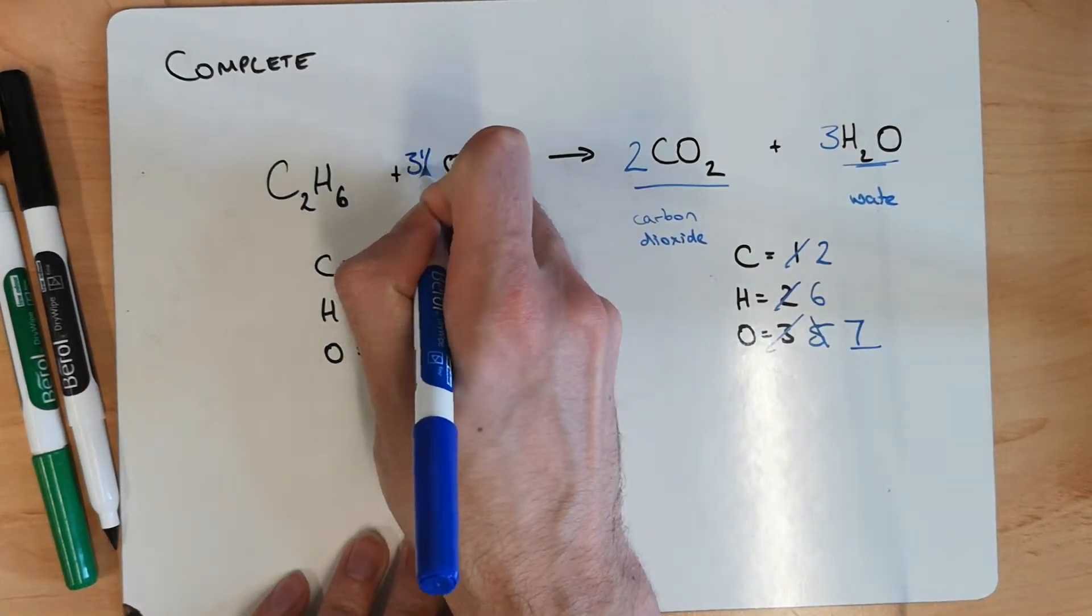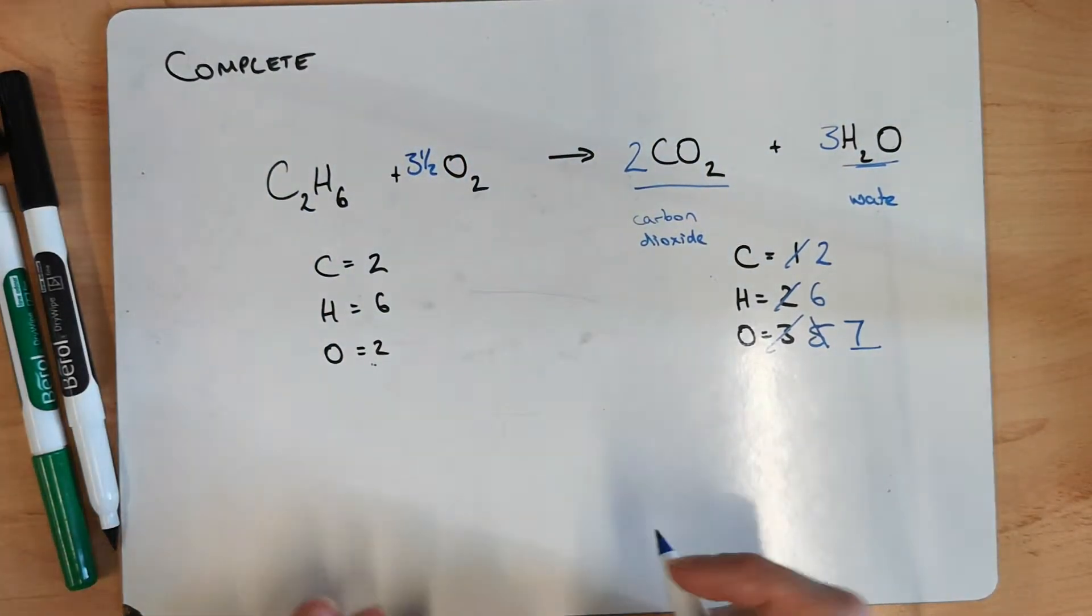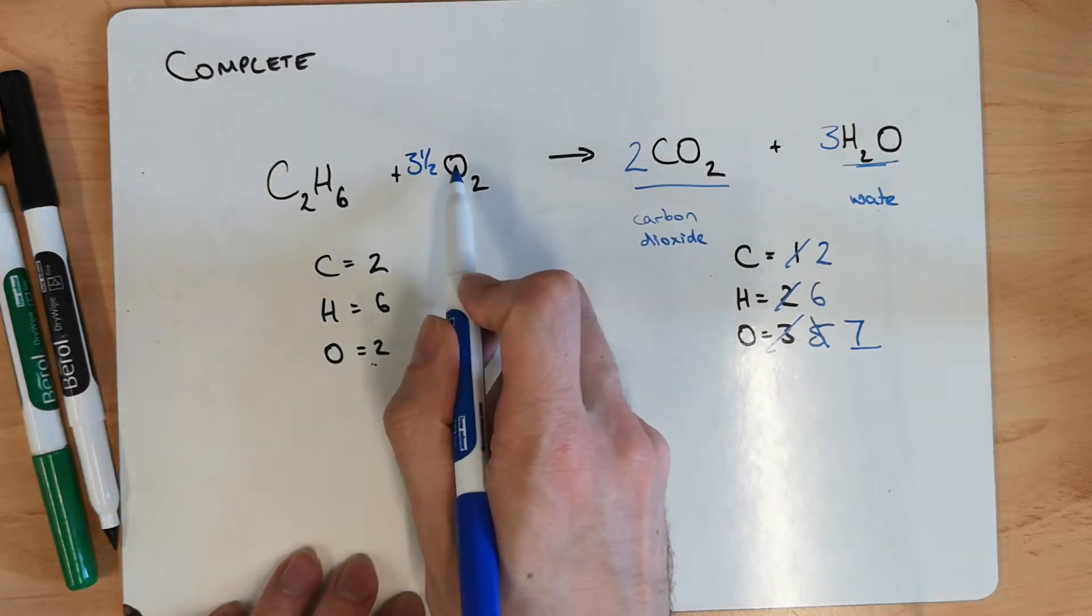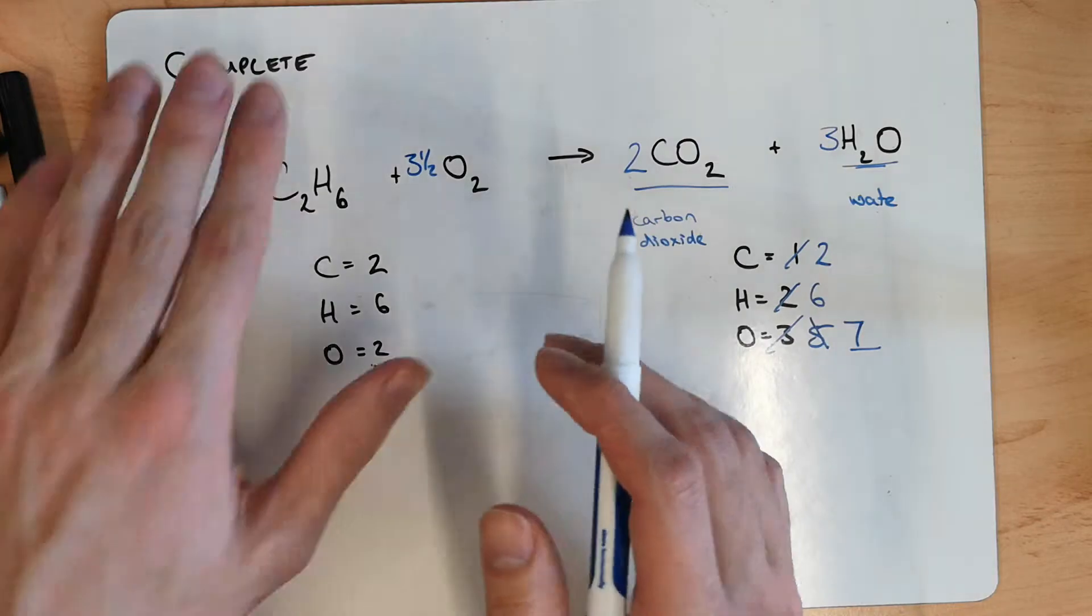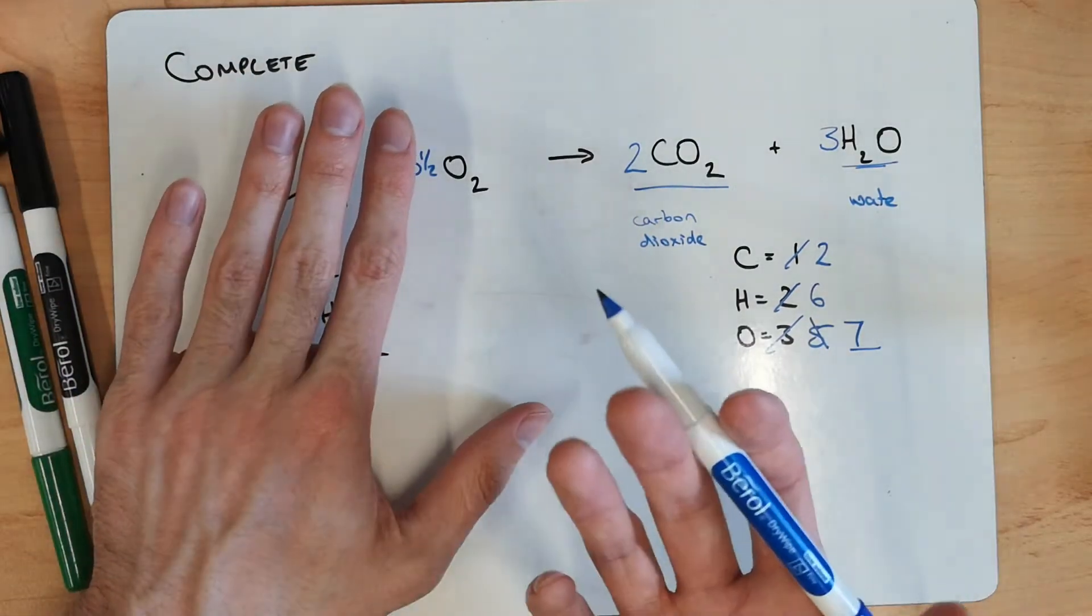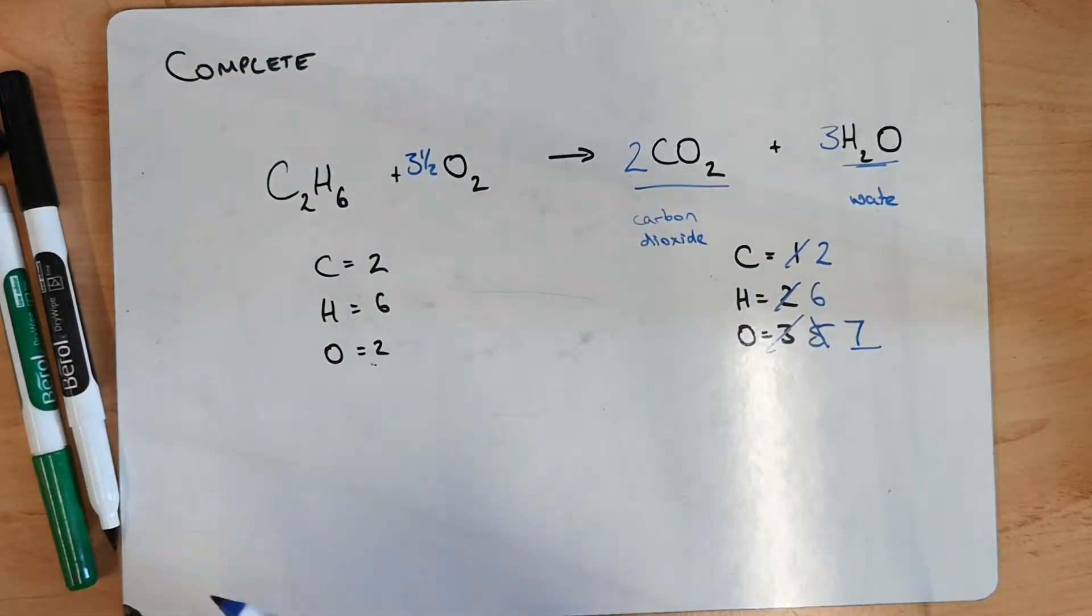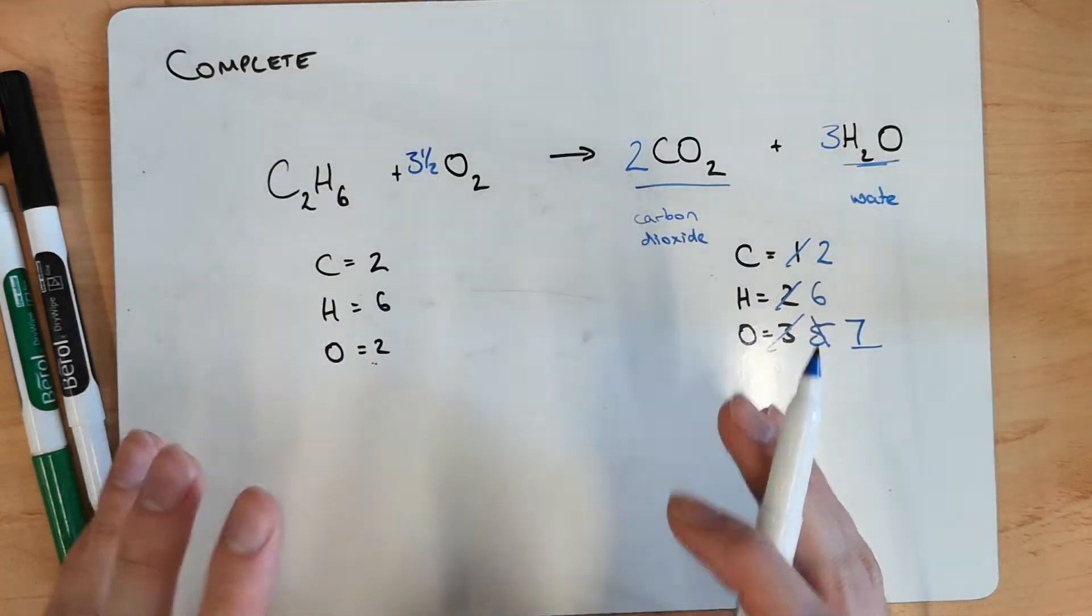So it's not going to be a whole number we times it by. But we can. In this case. Times by a half. And that's because we've got two oxygens present here. So if we times it by a half. We'd be times it. If it was just a half. We'd have just one oxygen. Times it by one and a half. We'd get three.